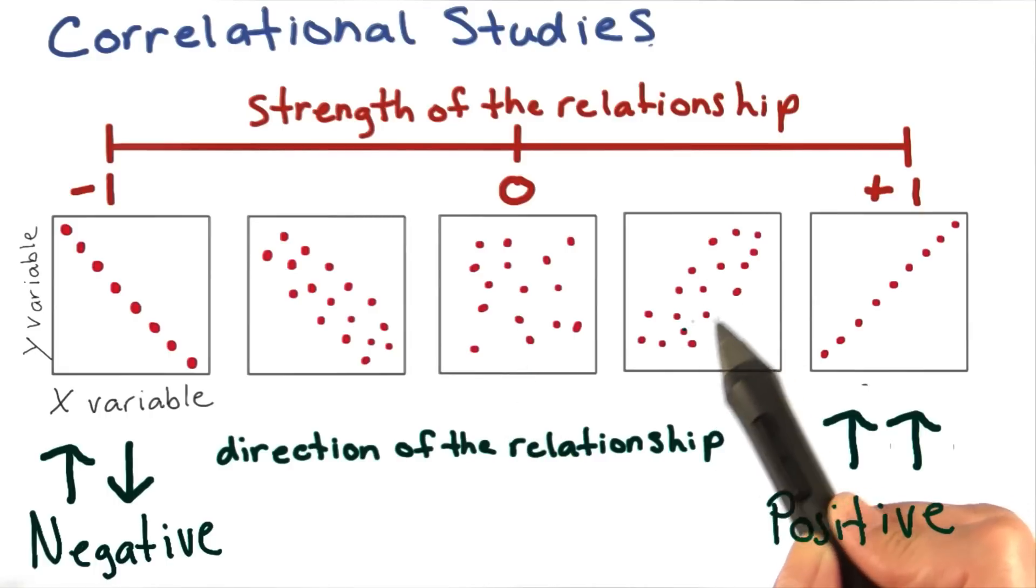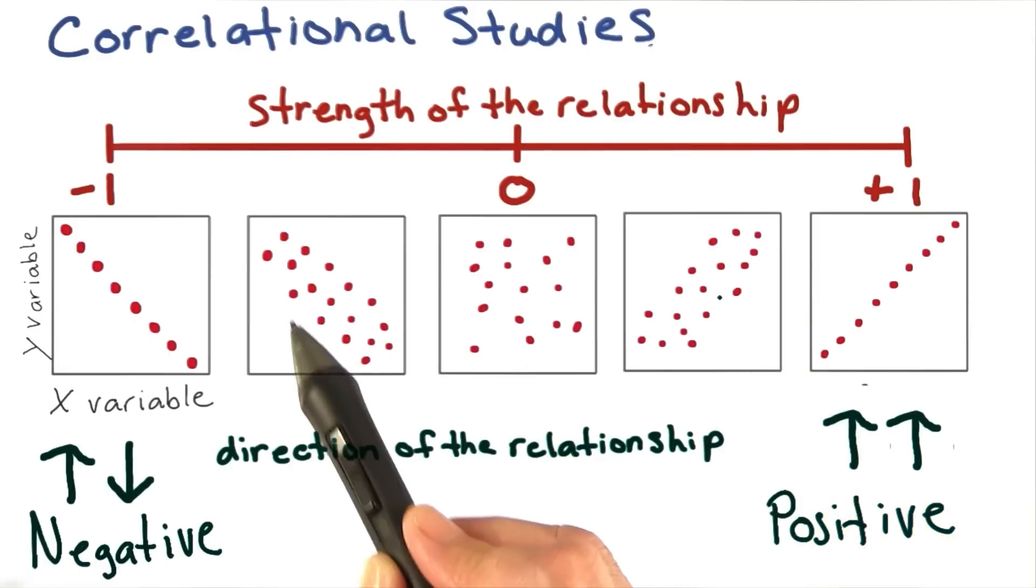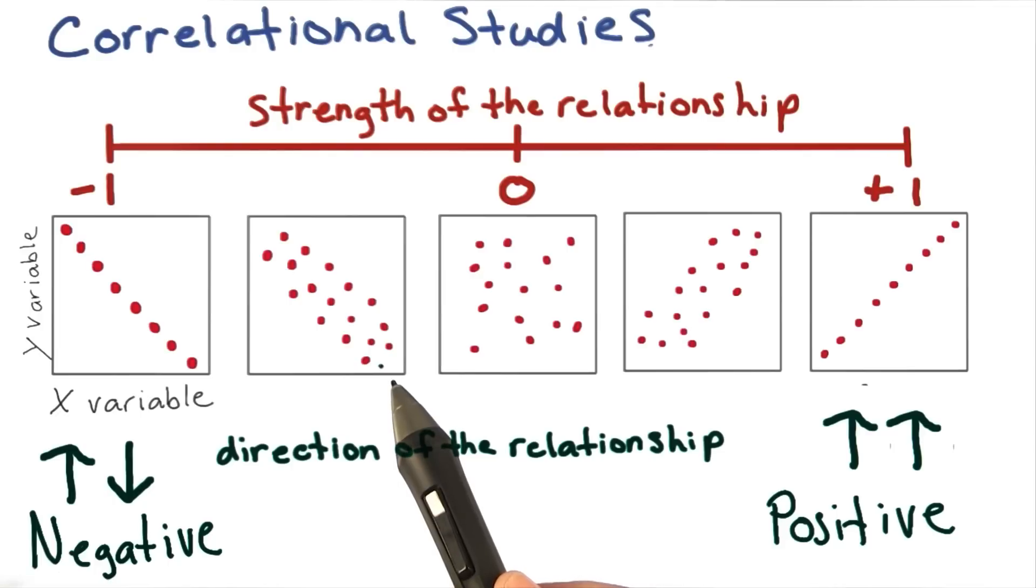Here, we see a moderate positive correlation. Here, we see a moderate negative correlation. Again, strength and direction of relationships are explained in correlational studies.